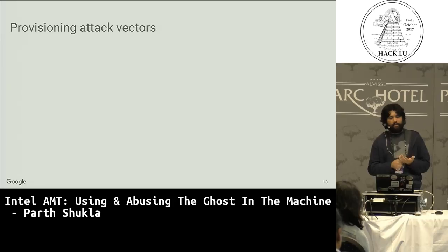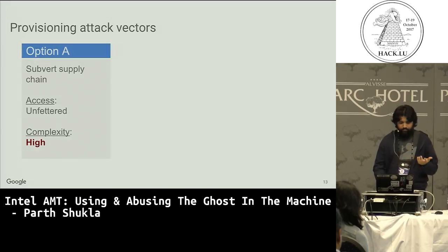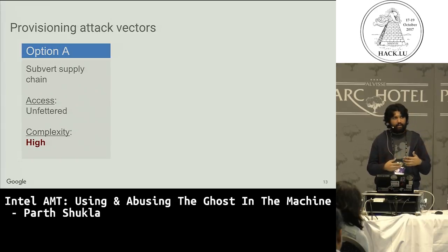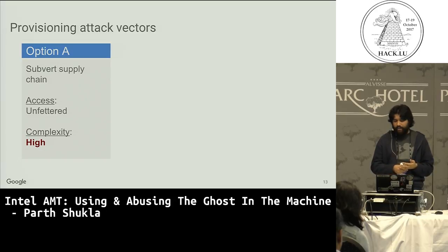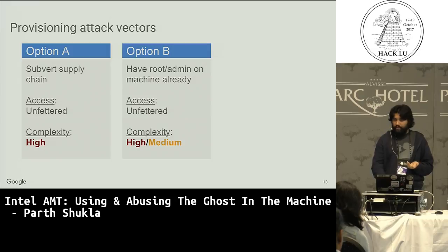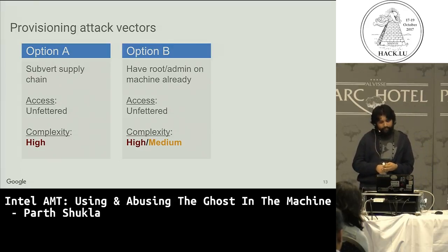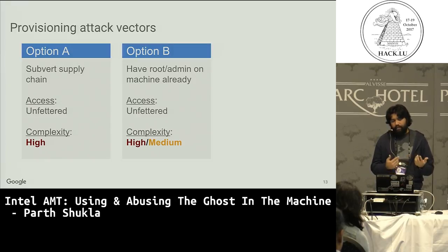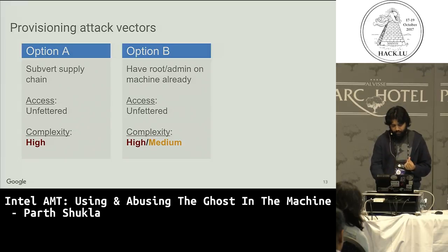Let's explore our options for provisioning AMT on a target machine. We can subvert the supply chain — complexity is high, likely attacker is highly resourced, either casting a wide net or targeting someone. Another option is if you already have root or admin on the machine — provisioning method is local agent on OS. Complexity is high if you think modern OSes are well protected, or medium if you think getting root is easy. Also, provisioning via local agent will get you client control mode, not admin control mode, which doesn't give full functionality. The likely attacker here is a sophisticated one looking for long-term persistence.